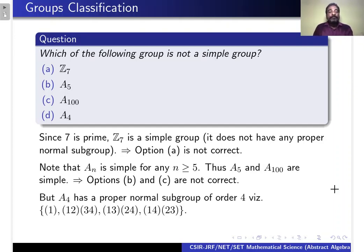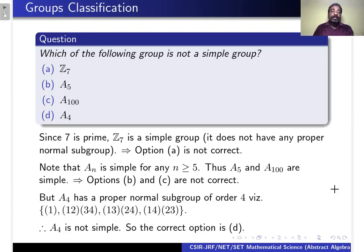A4 has a proper normal subgroup of order 4, namely the identity and the permutations (1 2 3 4), (1 3 2 4), and (1 4 2 3). Therefore, A4 is not simple. So the correct option is D.